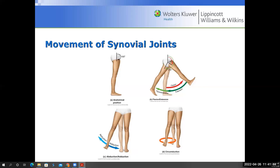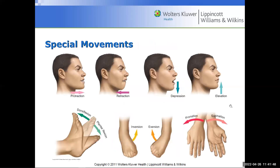Special movements: protraction is movement of the jaw away from the body's midline, and retraction is pulling it back in. Depression and elevation are opening and closing — moving the mandible up and down. Dorsiflexion and plantar flexion: for ballerinas going up on the tips of their toes, that's plantar flexion. When playing football and pointing toes downward to hit a volley across the laces, that is also plantar flexion.